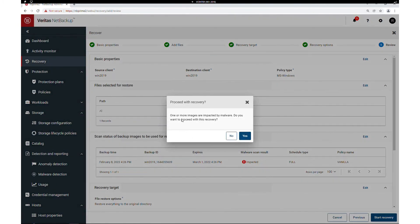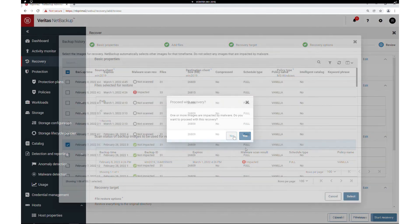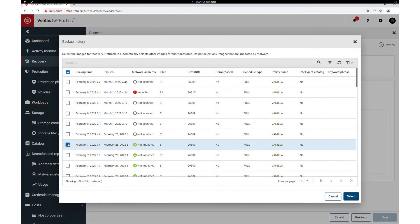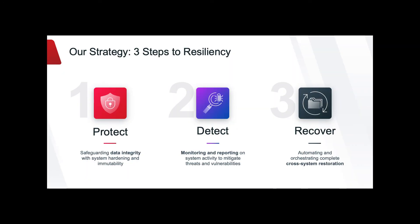If you decide to select an impacted copy, NetBackup will give you several warnings. With Veritas RIA established in three steps — protection, detection, and recovery — it provides a unified, multi-layer, hardened, and secure appliance platform to optimize operational efficiency and seamlessly integrates comprehensive protection and malware detection into an industry-leading backup recovery solution.